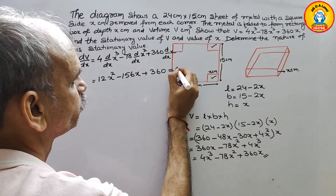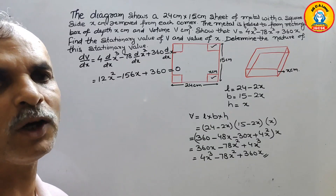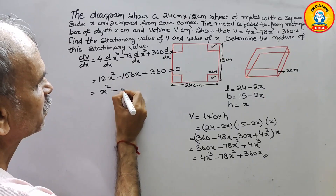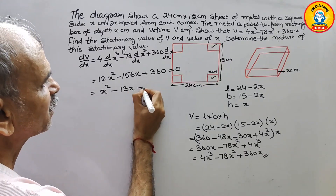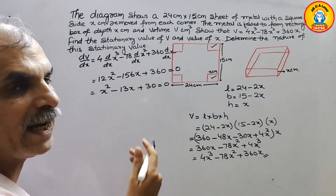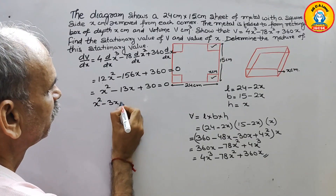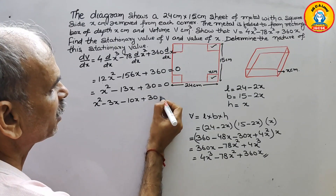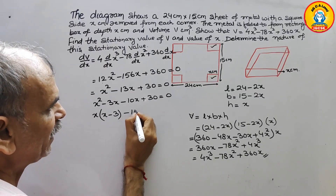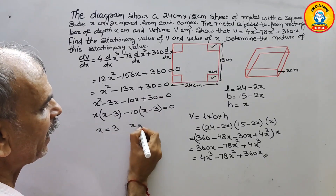Setting dV/dx = 0: 12x² minus 156x plus 360 = 0. Since 12, 156, and 360 are all divisible by 12, dividing through gives x² minus 13x plus 30 = 0. Factoring: (x minus 3)(x minus 10) = 0. Therefore x = 3 or x = 10.